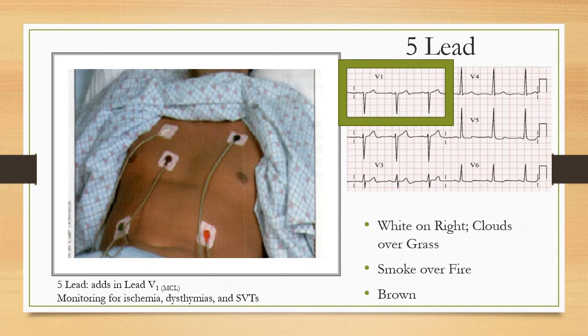The five-lead ECG adds another view of the heart via lead V1 or the MCL lead, which helps monitor the current traveling toward the ventricles. This combination of electrodes helps monitor for ischemia, dysrhythmias, and SVTs — supraventricular tachycardias, meaning abnormal heart rhythms above the ventricles, such as atrial fibrillation and atrial flutter. The mnemonic is 'white on right, clouds over grass, smoke over fire,' and some nurses add 'brown is chocolate close to the heart.'